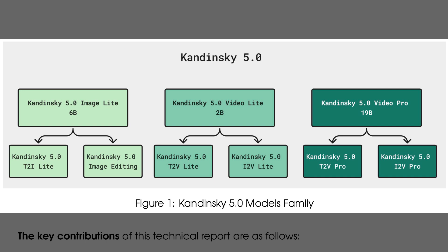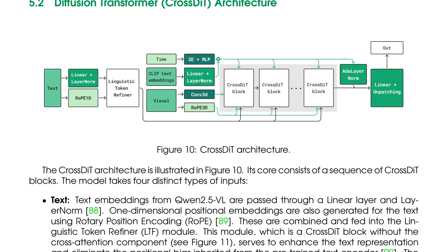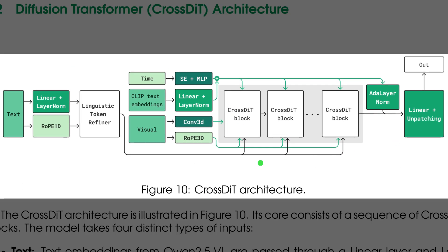The left branch shows the image light model with 6 billion parameters, which powers text-to-image light and image editing variants. The center branch presents the 2 billion parameter VideoLite model that supports text-to-video light and image-to-video light. The right branch highlights the 19 billion parameter VideoPro model, which drives text-to-video pro and image-to-video pro for the highest visual quality. Figure 10 shows how the crossed IT backbone fuses text, time, and visual inputs into a single stream of latents that the diffusion process can refine.